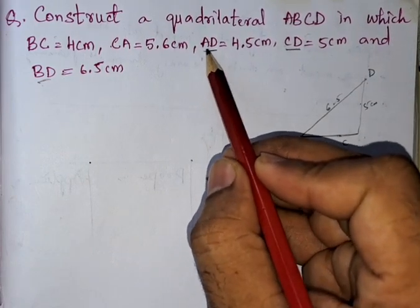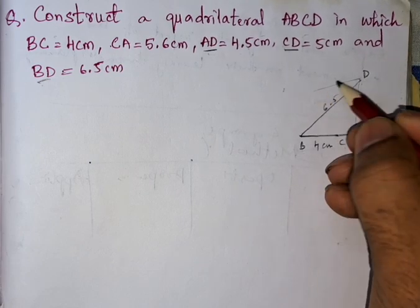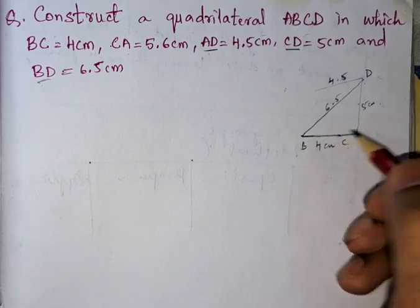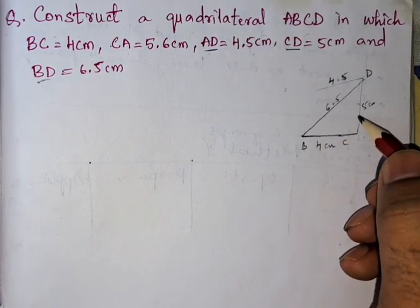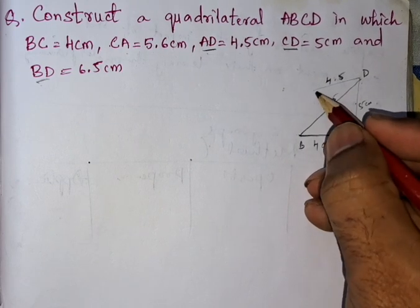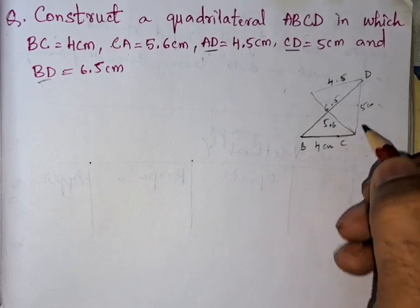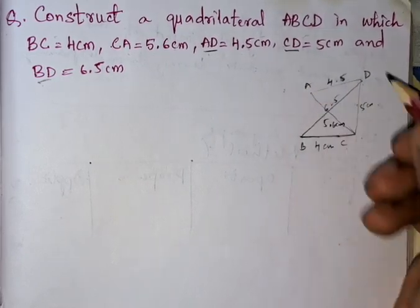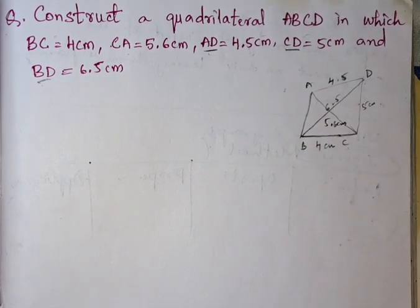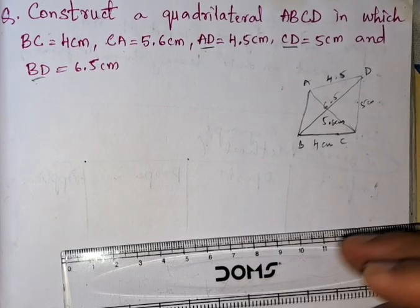Now we have point D. From A to D it is 4.5 centimeters, and from C to A — that is the diagonal — it is 5.6 centimeters. This gives us point A. Now we can join the fourth side. This is our rough diagram. Now let us start the actual construction.